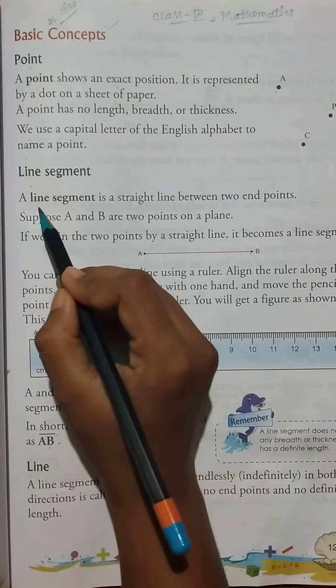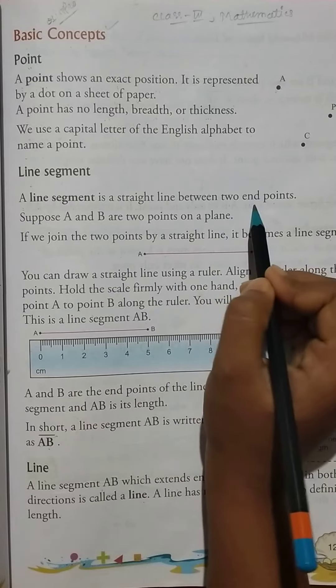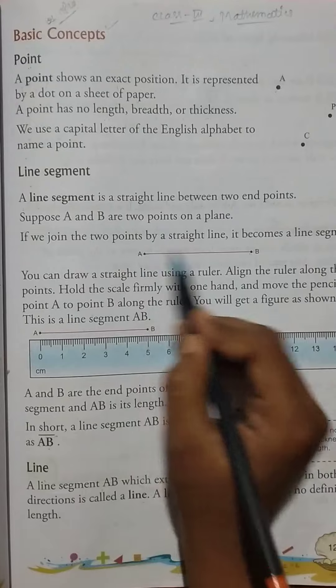Line segment. A line segment is a straight line between two end points.